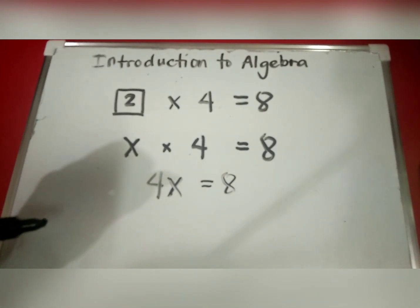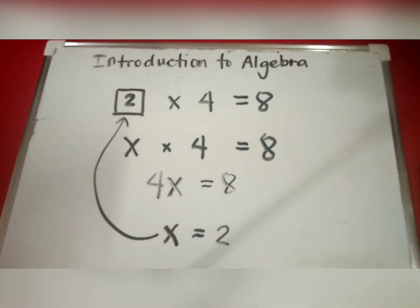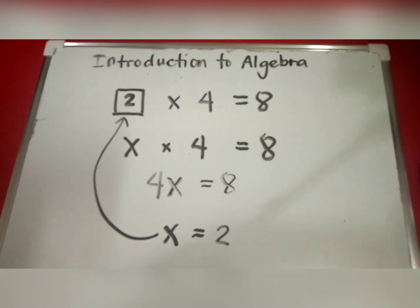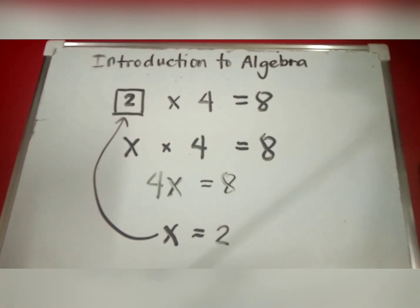In English we say '4x equals 8,' meaning that 4x makes 8, and the answer is written as x equals something. Here, x is what we call a variable. To solve, use this neat step-by-step approach: first, work out what to remove to get x by itself. Next, remove it by doing the opposite operation, and do that to both sides. The opposite of multiplying is dividing.